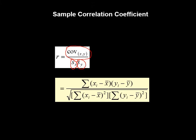This is the computational formula for the sample correlation coefficient. N is the sample size, and Sx and Sy are the standard deviations of the X and Y variables respectively. When you compute it, you get a standardized number.